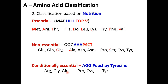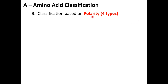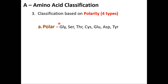To summarize nutritional classification: essential amino acids — 'mat on the hilltop will lead you towards victory'; non-essential — triple G, triple A, PSCT; conditionally essential — arginine, proline, cysteine, tyrosine. Classification based on polarity gives three types of polar amino acids and one non-polar group.